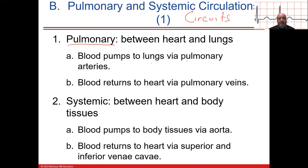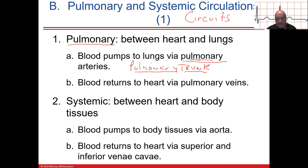Blood is pumped to the lungs via the pulmonary arteries from the pulmonary trunk. The pulmonary trunk is technically an artery because it takes deoxygenated blue blood from the right ventricle. The pulmonary arteries go to the right and left lungs. Then oxygenated blood returns via the pulmonary veins to the left atrium. So: right ventricle pushes blood into the pulmonary trunk, and the pulmonary veins drain into the left atrium.